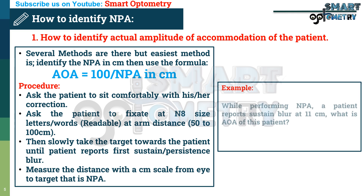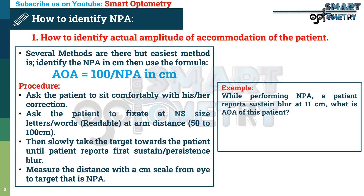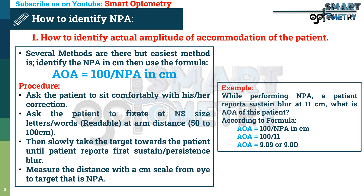For example, while performing the near point of accommodation procedure, a patient reports sustained blur at 11 centimetres. What is the amplitude of accommodation of this patient? According to the formula, amplitude of accommodation equals 100 divided by near point of accommodation in centimetres, which equals 100 divided by 11, giving an amplitude of accommodation of approximately 9.09 or 9 diopters.